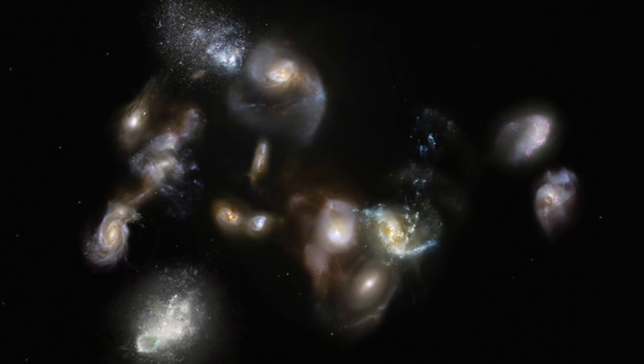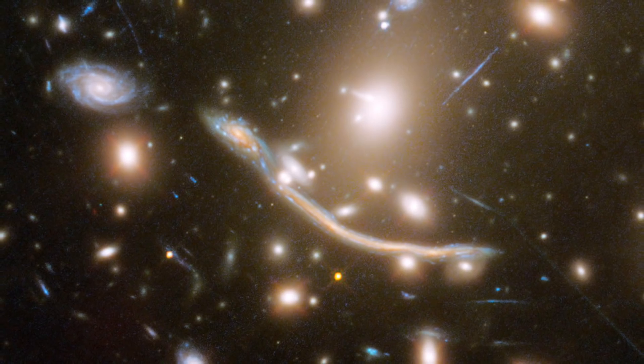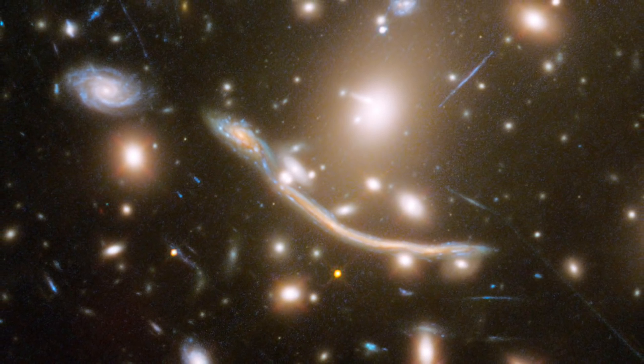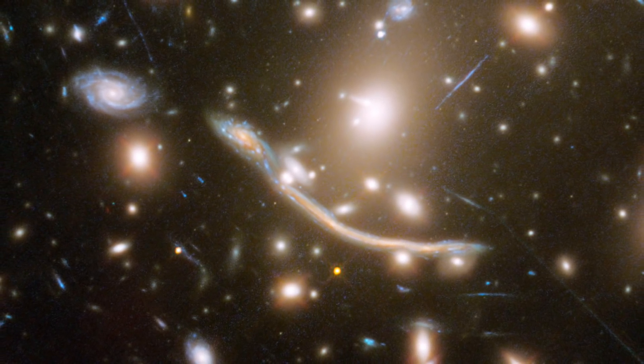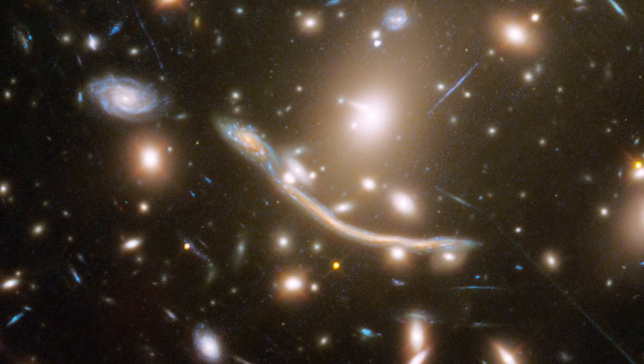And the images of distant galaxies are distorted more than can be explained by the effects of ordinary matter between the distant galaxies and our telescopes. All of these are reasons why astronomers believe that dark matter is real.